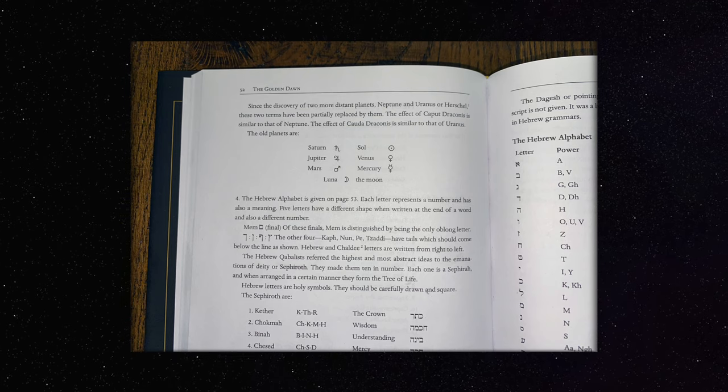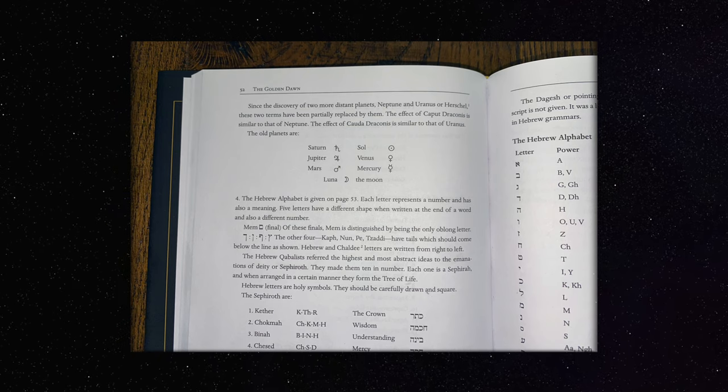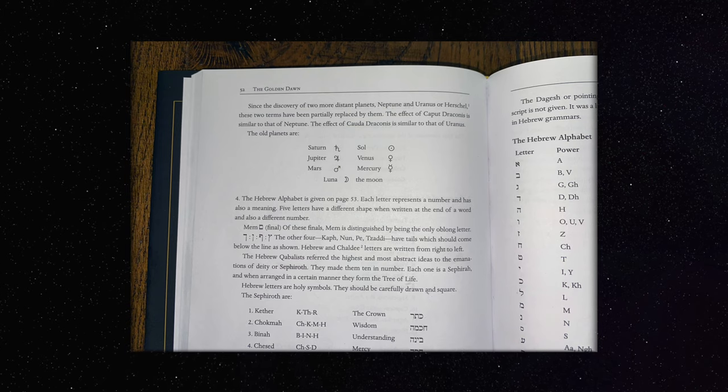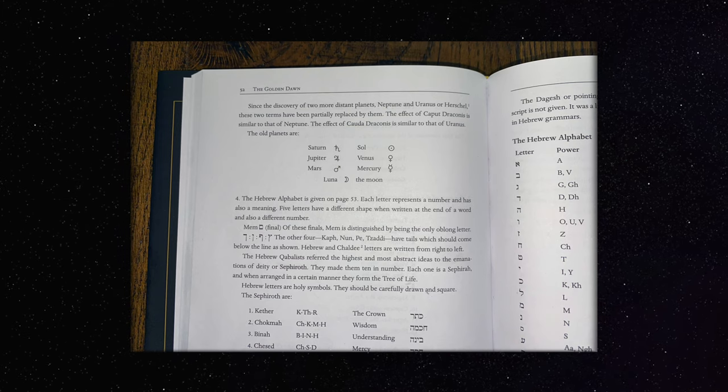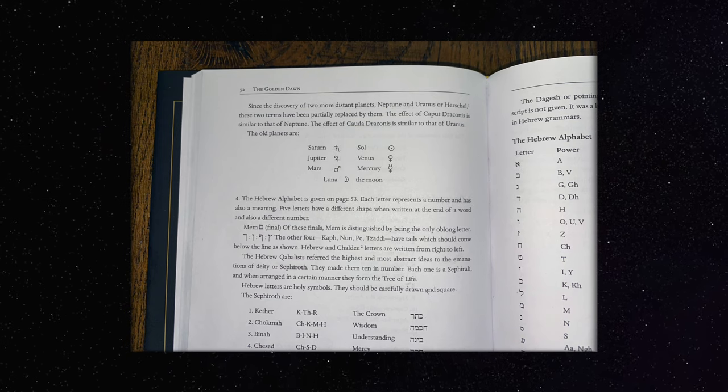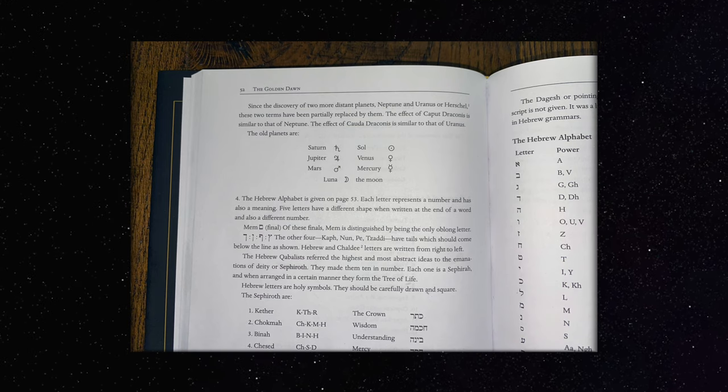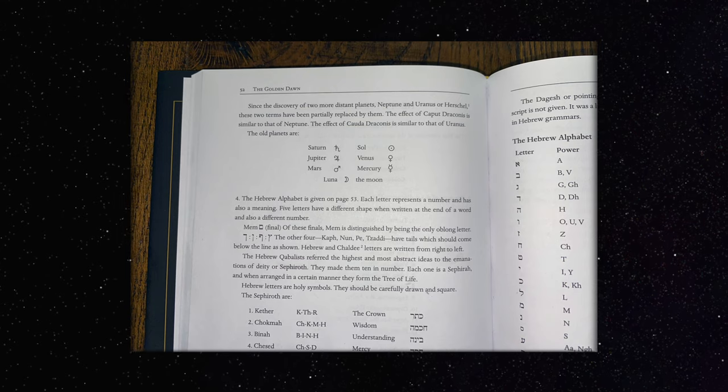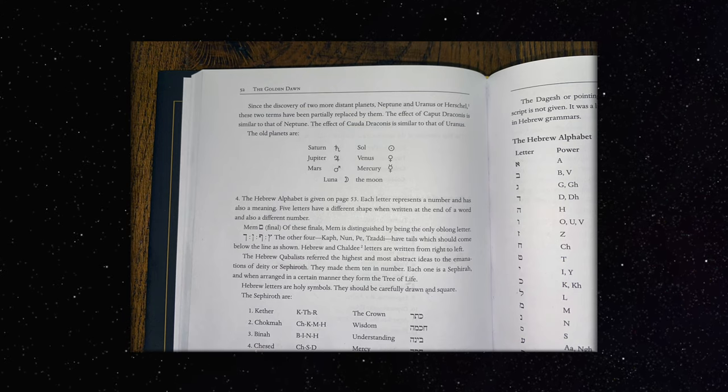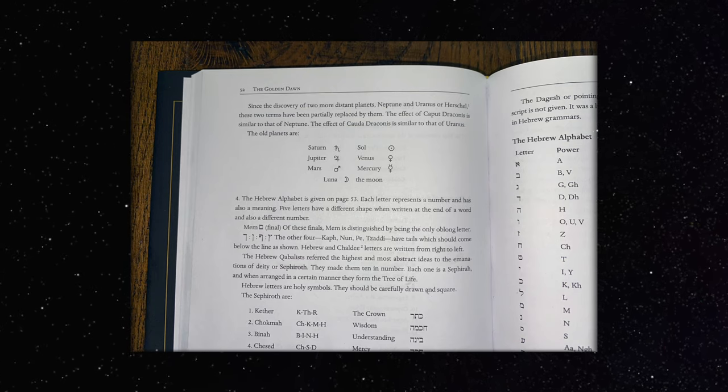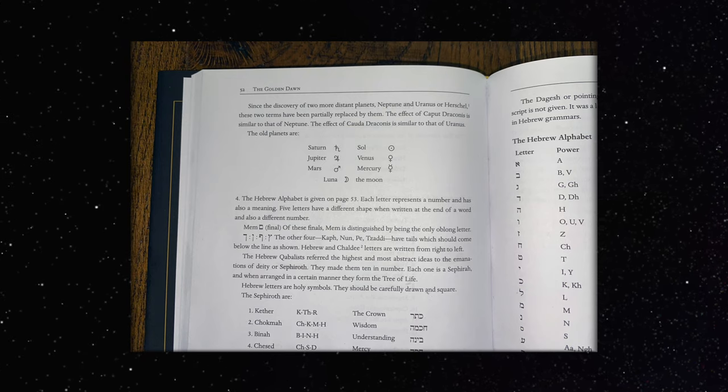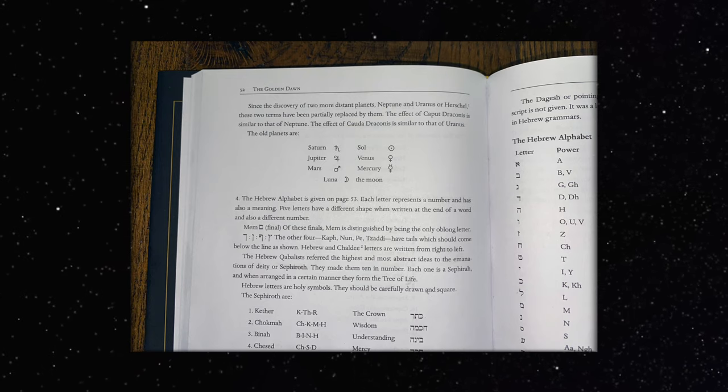Hebrew and Chaldi letters are written from right to left. The Hebrew Kabbalists referred the highest and most abstract ideas to the emanations of Deity, or Sephiroth. They made them ten in number. Each one is a Sephiroth, and when arranged in a certain manner, they form the Tree of Life. Hebrew letters are holy symbols. They should be carefully drawn and square.